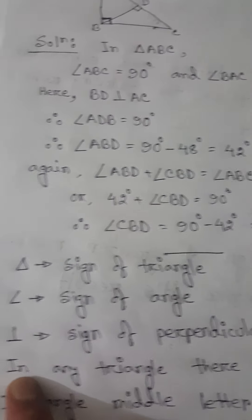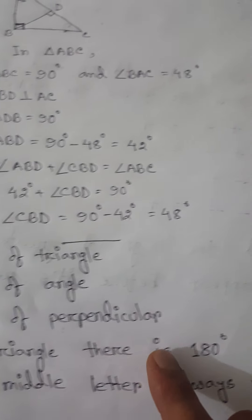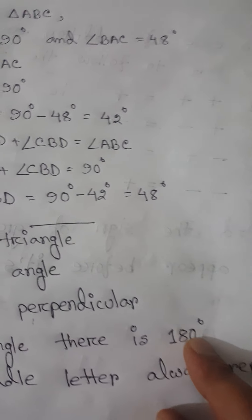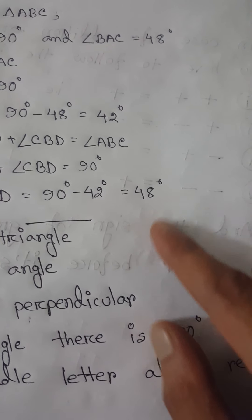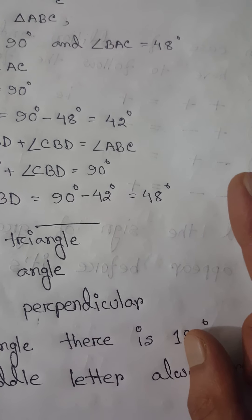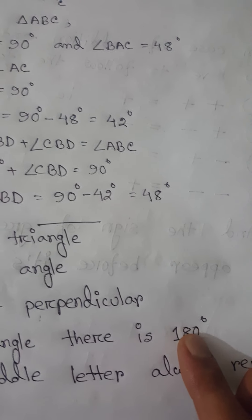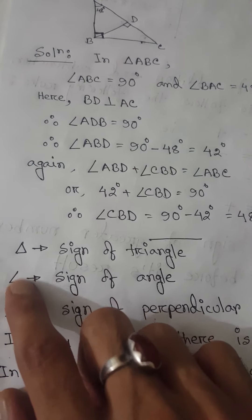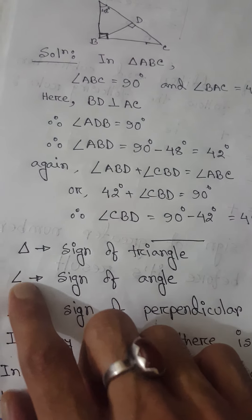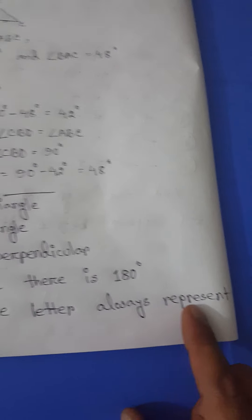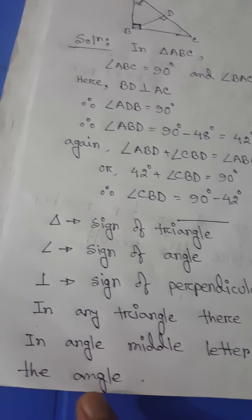Listen carefully — the perpendicular sign: both sides always represent 90 degrees. The next important basic is that in any triangle there is 180 degrees. So in fact, whatever the triangle may be, it must contain 180 degrees.